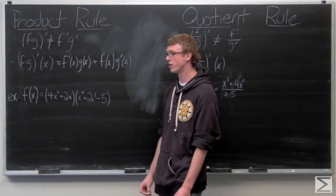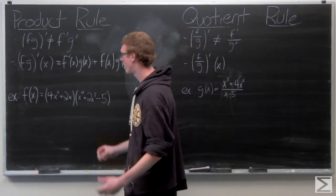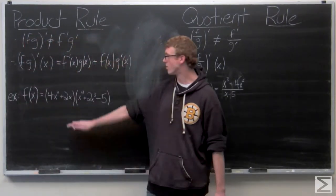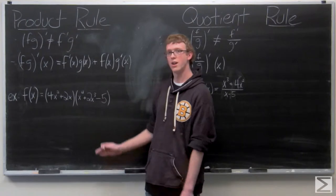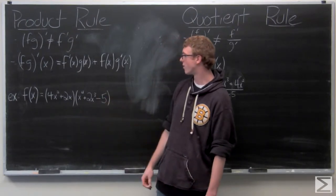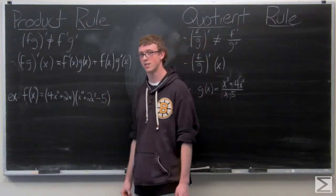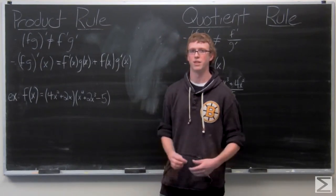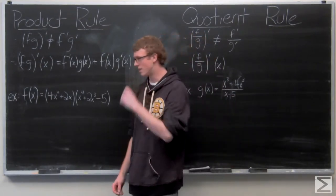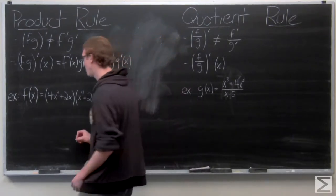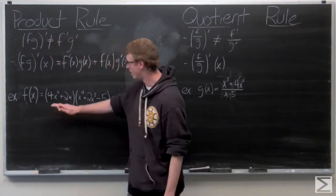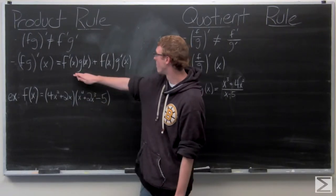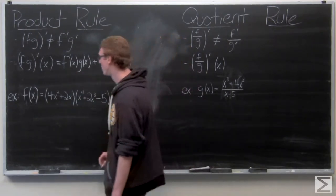So we have f of x equals (4x squared plus 2x) times (x to the fourth plus 2x cubed minus 5). Now we could simply multiply that out and use linearity and the power rule, but instead we want to use our product rule for the first time here. We're going to take the first factor as f of x and the second as g of x.